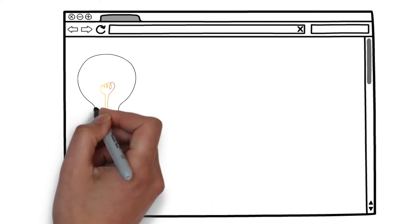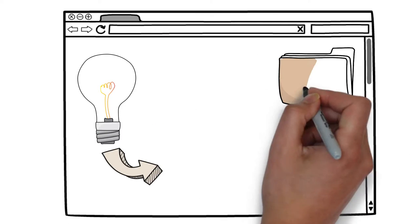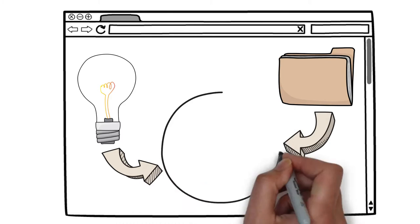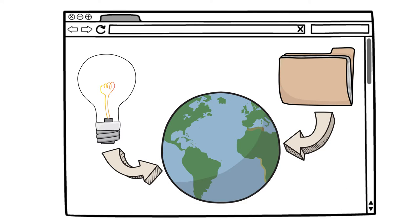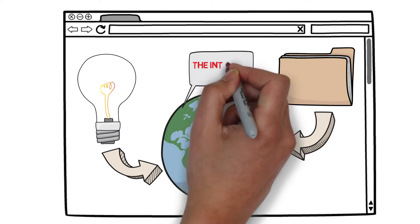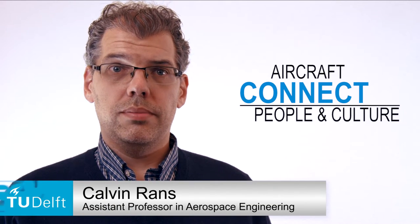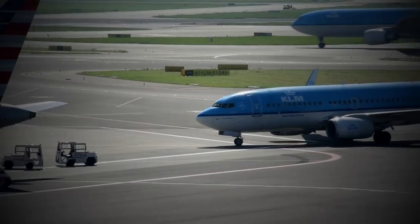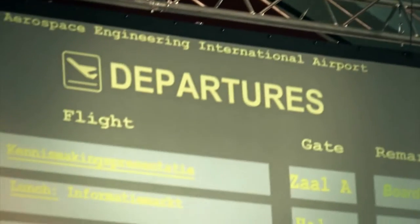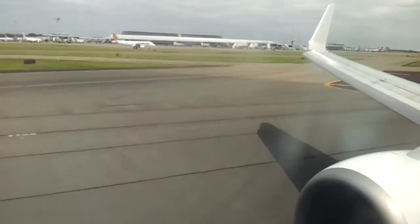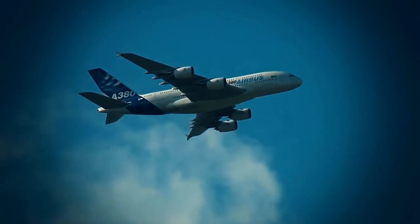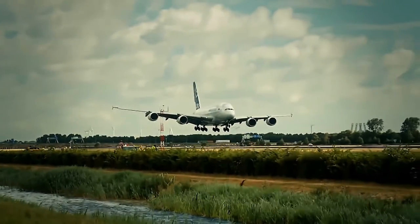The Internet interconnects ideas and information in a blink of an eye across the entire globe. We rely on it constantly and take it for granted equally as often — that is, until something goes wrong. Like the Internet, aircraft also provide timely interconnections. Chances are that someone or something you have encountered today relied on the physical interconnections made possible by air transportation. It is an essential element of our modern global society that many of us take for granted.